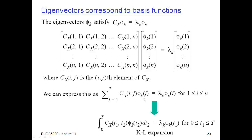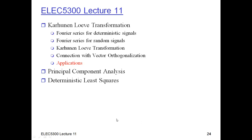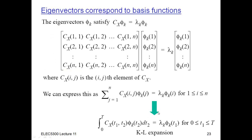The eigenvector is just an n-dimensional vector, whereas the eigenfunction is an infinite-dimensional function running from 0 up to time t. So in order to find the φ_k's, you solve this integral equation, which is very similar to solving an eigenvector equation in matrix algebra. Now let's take a look at one particular example of the Karhunen-Loève expansion for a case with quite complex structure.